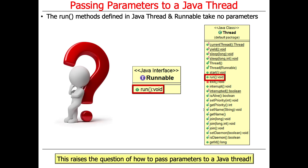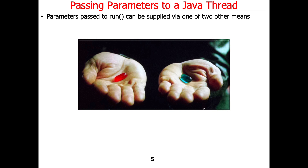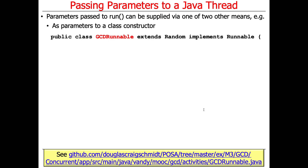Well, there's a trick, and the trick is to use one of two approaches. One approach is to implement Runnable — or extend Thread for that matter — and then pass parameters to the constructor of the class that you're using to implement Runnable or extend Thread. So that's one approach. Let's take a look at that approach first.